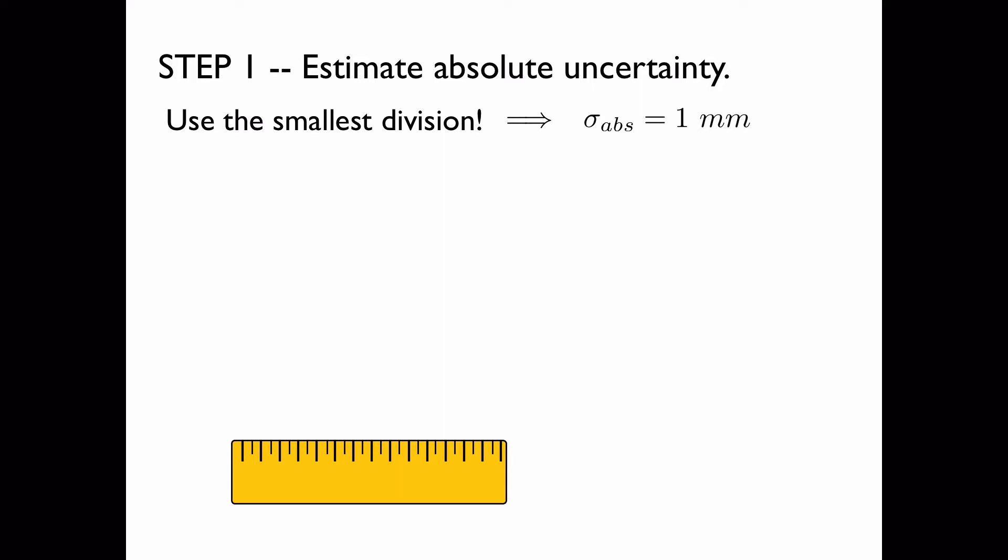We do this because the human eye only has limited accuracy and also because the ruler was probably not manufactured to an accuracy much greater than 1 mm. Here we convert this to 0.1 cm for use in the next step, which is to calculate the percent uncertainty.